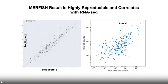Looking at data robustness: we did two biological replicates and measured transcript levels across the entire slide. They are highly reproducible with an R-squared of 0.94. We also looked at whether the MERFISH results are consistent with bulk RNA-seq data from the same retina. The MERFISH count is nicely positively correlated with concordance between these two technologies.